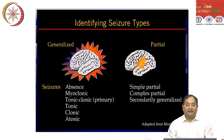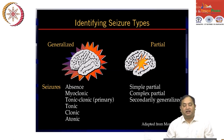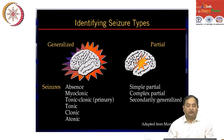Seizures are identified as either generalized or partial. Generalized seizures include absence seizures, myoclonic seizures, tonic-clonic (primary and secondary), and atonic seizures. Partial seizures include simple partial, complex partial, and secondary generalized seizures. Depending on the type, we select the appropriate drug therapy.